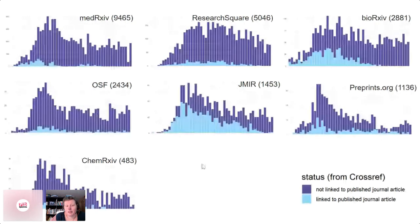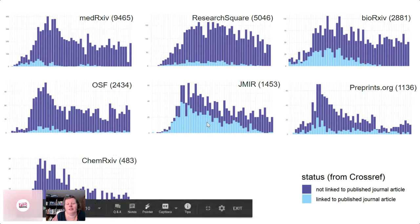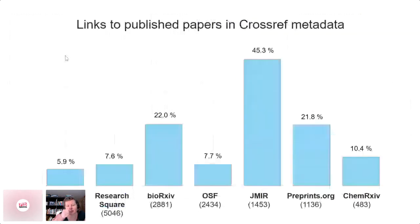What we see here is the number of preprints per week per preprint server. The light blue are preprints linked to a published paper, and the dark blue are all other preprints not linked to a published paper. Across the horizontal axis, these are preprints posted per week, covering a whole year from January 2020 to about two weeks ago. You do see that the largest proportion linked to published papers is for JMIR, which as Martin said is very closely linked to a publisher — about 45%. Preprints.org comes in at 21%, BioArchive at 22%, MedArchive only 5%, and OSF also very low.